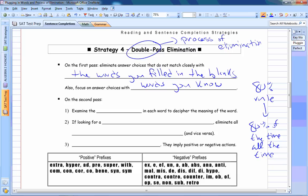Now, if you have to do a second pass, clearly there are some vocab issues you have to resolve. And clearly there's more than one word you don't know. Maybe there's two or three words you don't know in the choices. So this is what we can do to continue our process of elimination. So try examining the root in each word to decipher the meaning of a word. If you're looking for a positive word, eliminate all negative words, and vice versa.